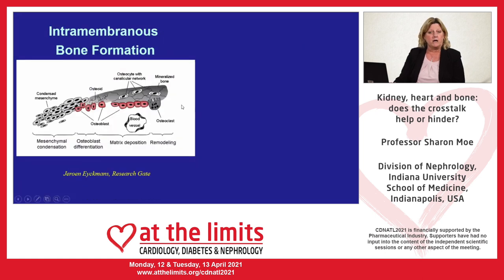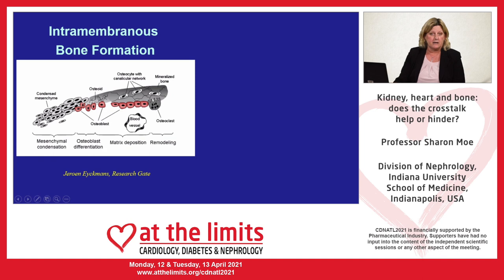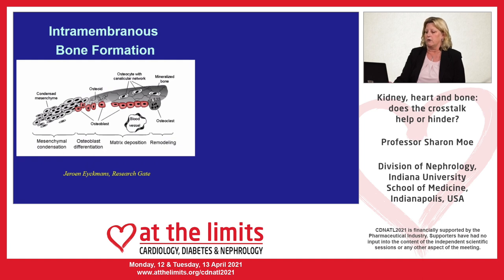Intramembranous bone formation, which occurs in the skull, starts from mesenchymal cells that differentiate into osteoblasts, laying down an unmineralized bone called osteoid. Then some of these cells become osteocytes with a canalicular network, and blood vessels infiltrate. Once the blood vessels have infiltrated, circulating monocytes can home to that bone, fuse to form osteoclasts.